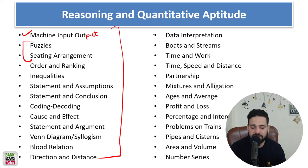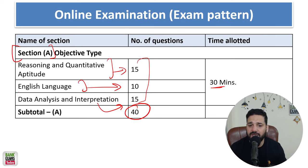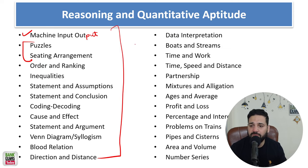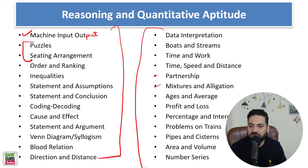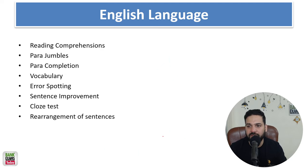In the Quantitative Aptitude and Reasoning section, you will see Time and Work, Time Speed and Distance, Problems on Trains, Boats and Streams, Partnership, Mixtures and Allegations, Ages and Averages, Profit and Loss, Percentage and Interest, Pipes and Systems, Area and Volume, and Number Series. Note that Data Interpretation is listed separately from this section.